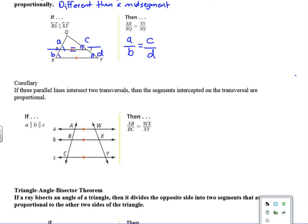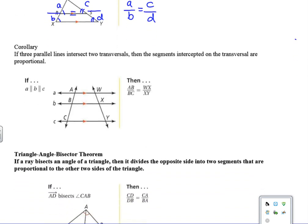Alright, so we have a corollary, and the corollary is if any three parallel lines intersect two transversals, then the segments intercepted on the transversals are proportional. So here again, I kind of keep this the same way in my head. As I'm summarizing this, this length over this length equals this length over that length, so A over B equals C over D.